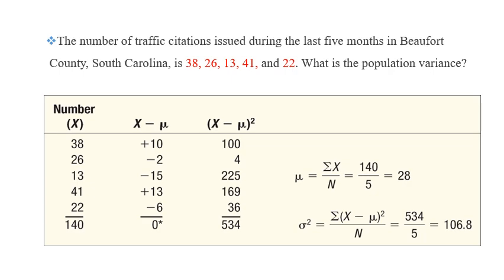Here we have another example. The number of traffic citations issued during the last five months in Beaufort County, South Carolina, is 38, 26, 13, 41, and 22. What is the population variance? Here we mentioned population, so these represent population. We write down the values in x column. The sum of them is 140, so the mean is 140 over 5, which is 28. We find the difference between the value and the mean: this is positive 10, negative 2, negative 15, plus 13, negative 6 respectively. The sum of them is 0, as we know.